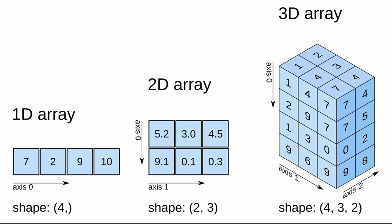Now I'll show you pictorially the three types of arrays we need to cover: one-dimensional, two-dimensional, and multi-dimensional (which means three-dimensional and beyond). In a 1D array, there is only one row with — for example — four integer values. Its axis is only one, which is the x-axis.